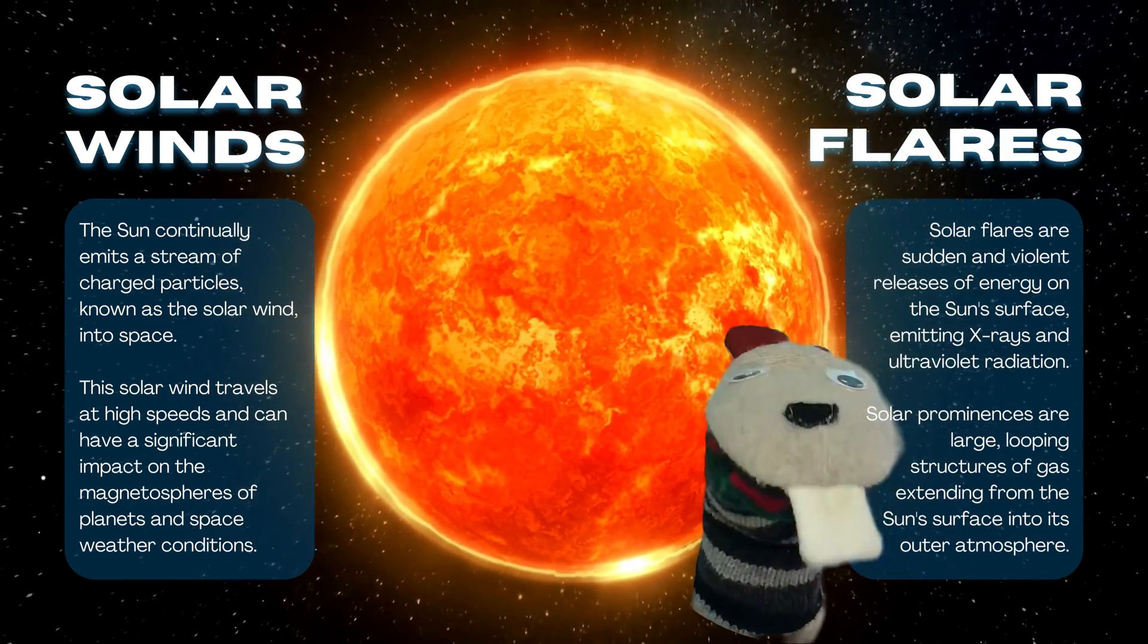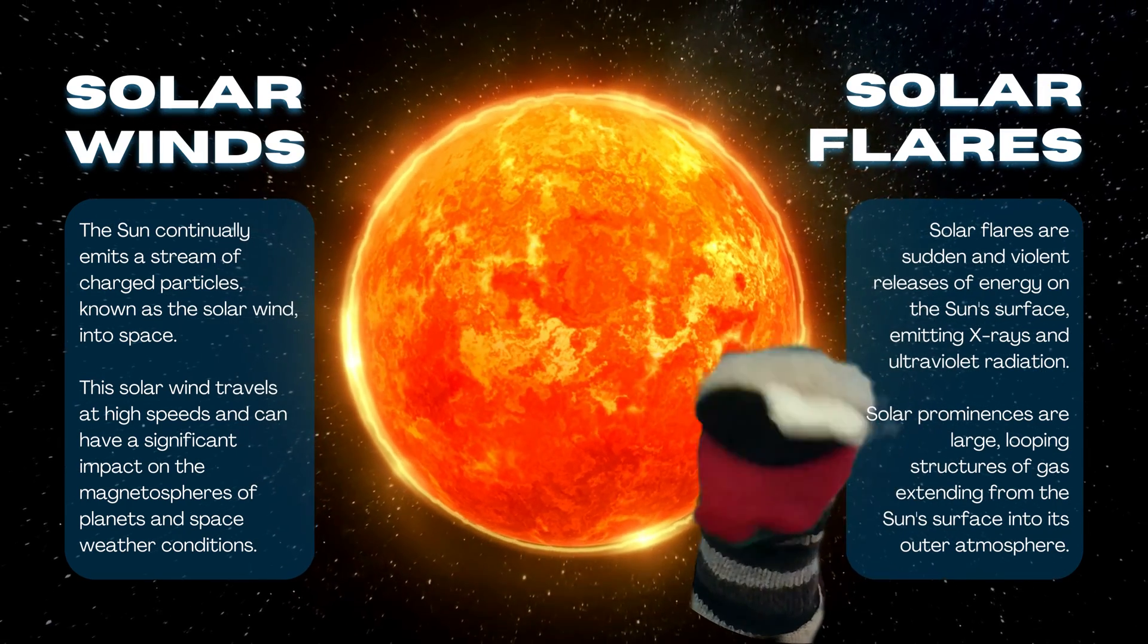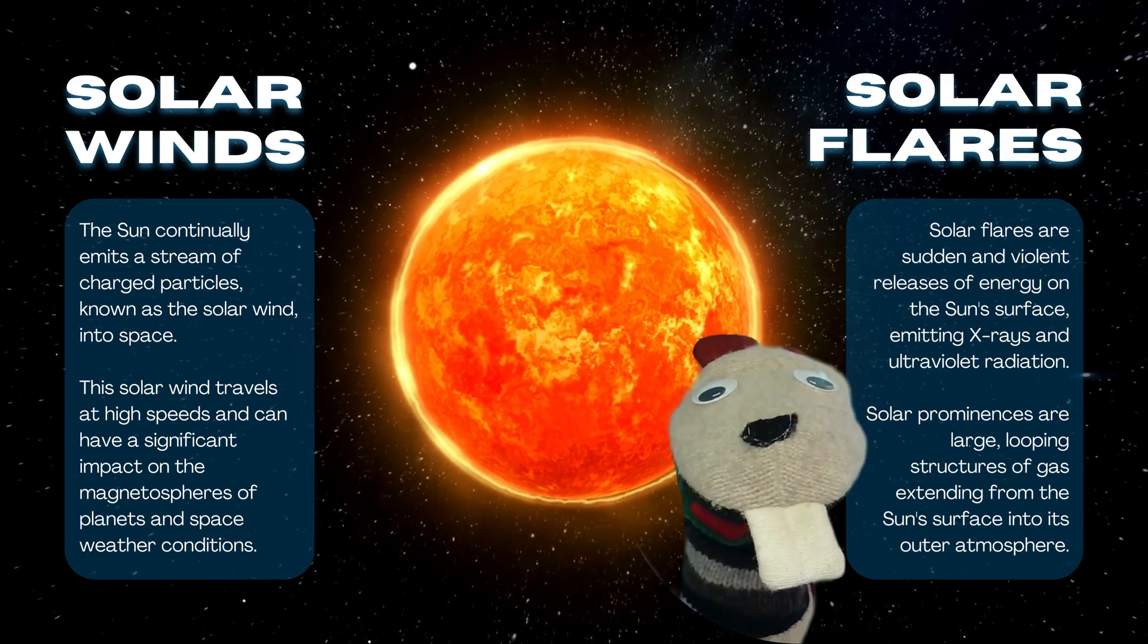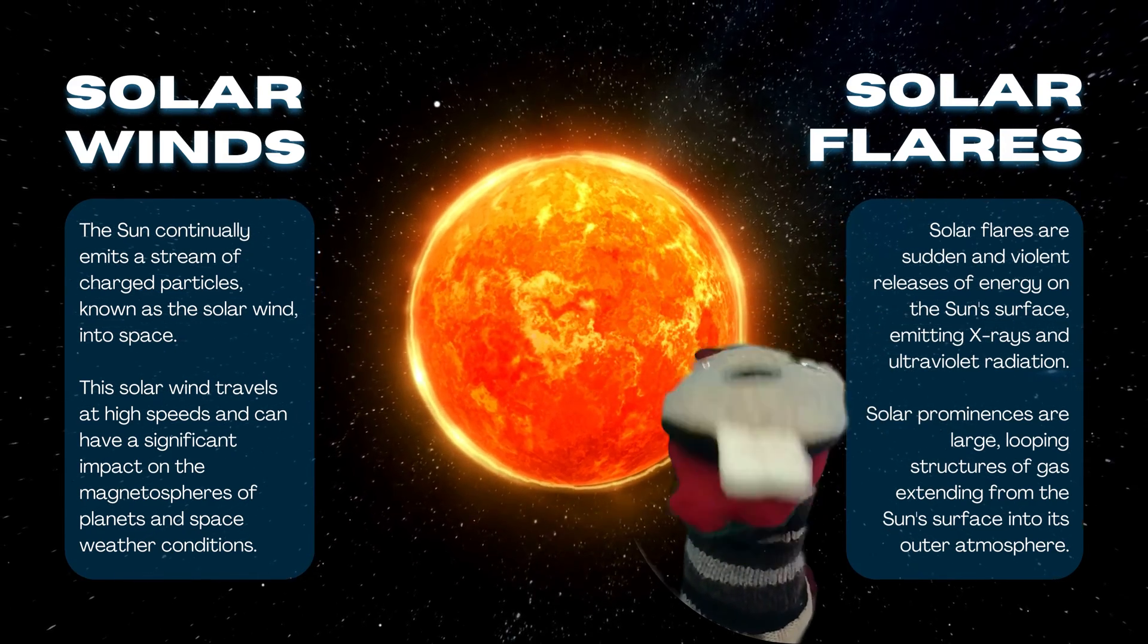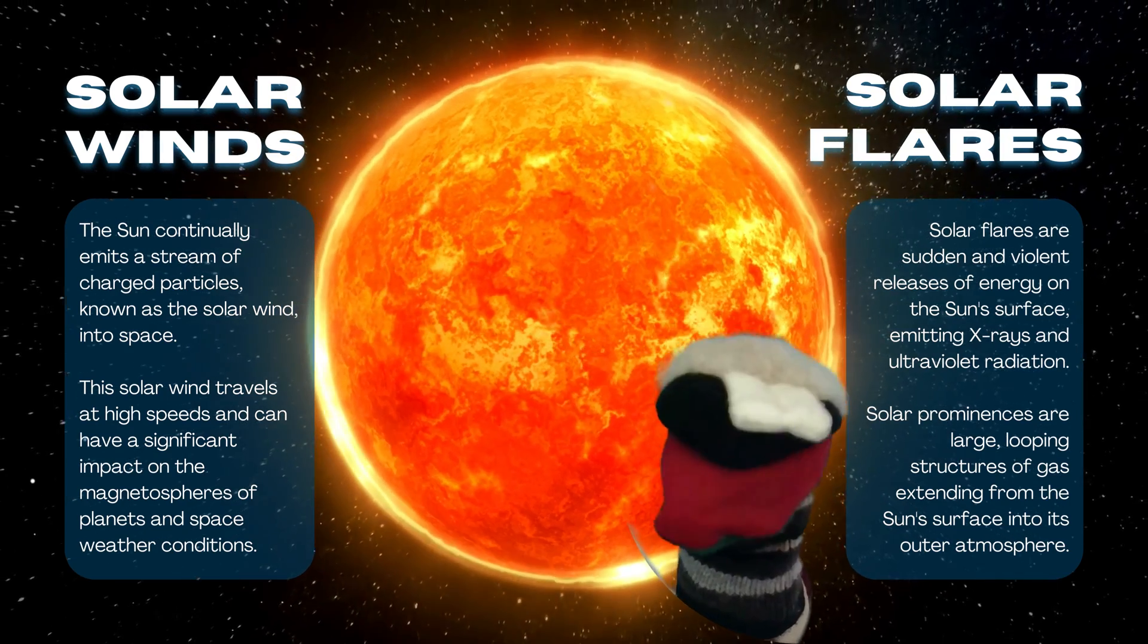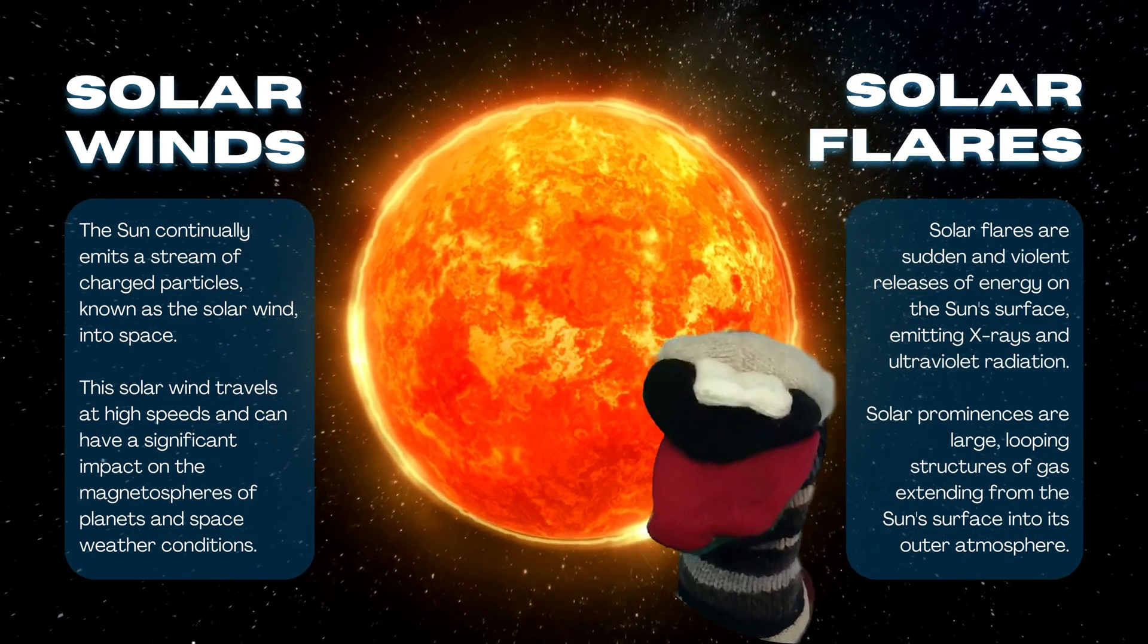Now the sun has some solar winds occasionally. They emit a stream of charged particles known as solar wind into space, and they travel at high speeds.